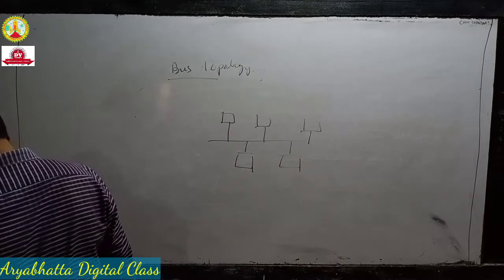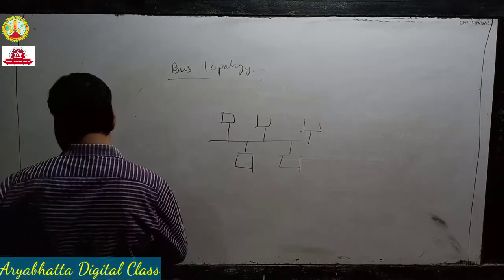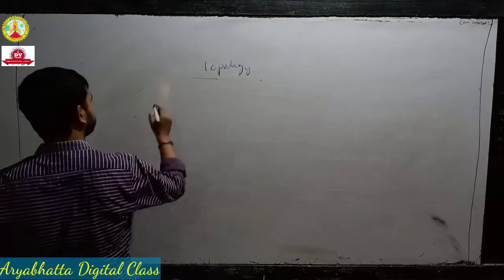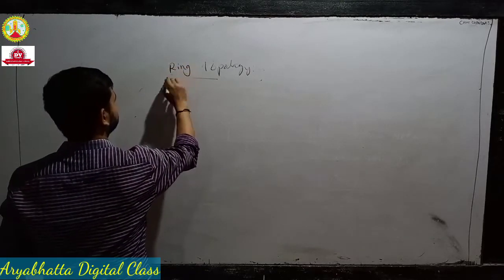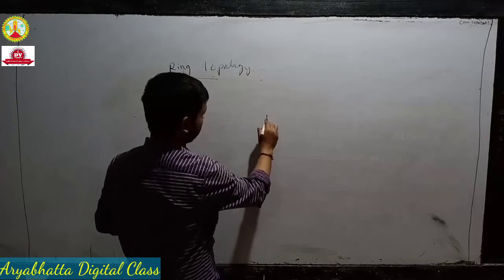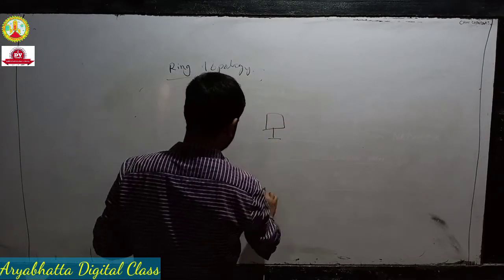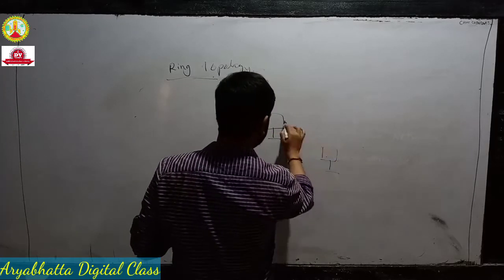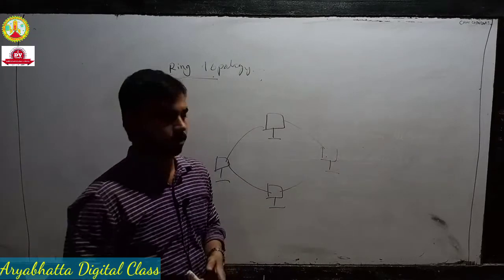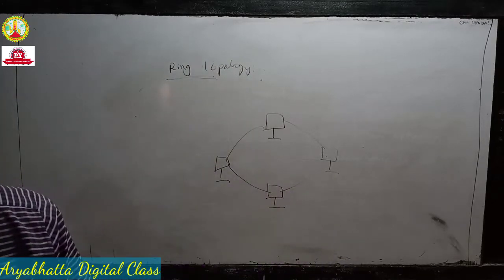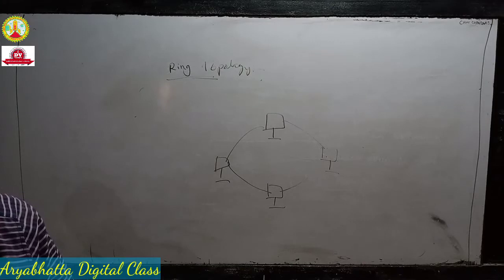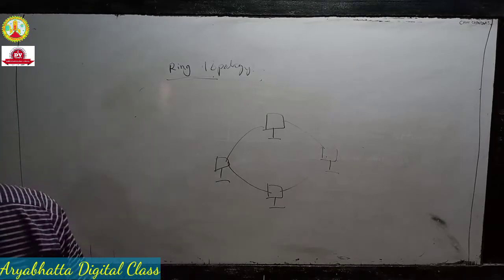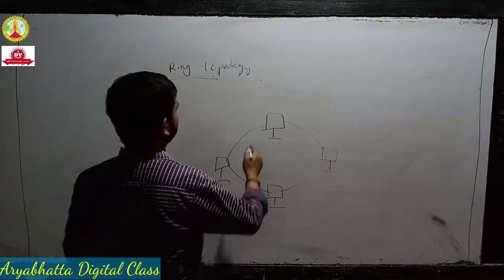Next is ring topology. Ring topology is connected in a circular pattern — like that. This is ring topology. It is also called circular topology.